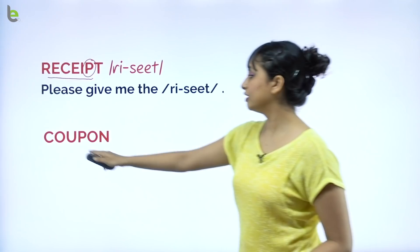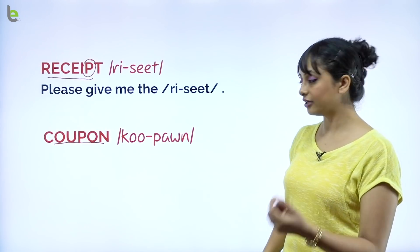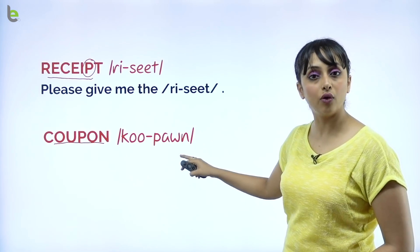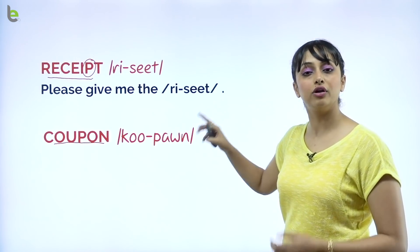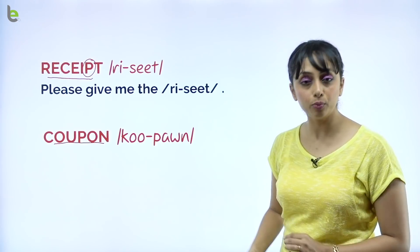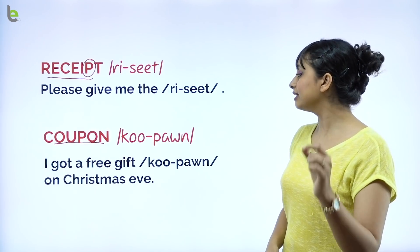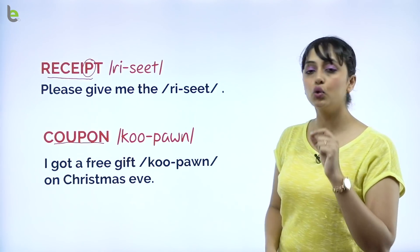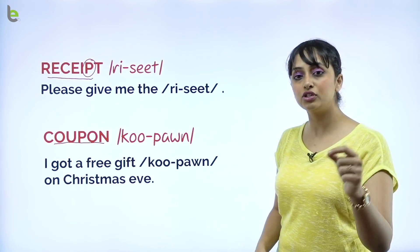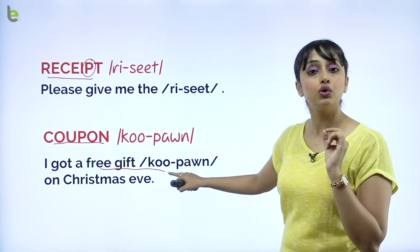The next word — its correct pronunciation is 'coupon.' Coupon. Not 'coo-pon' the wrong way — it is 'coupon.' For example: I got a free gift coupon on Christmas Eve. What did I get for Christmas? A free gift coupon.